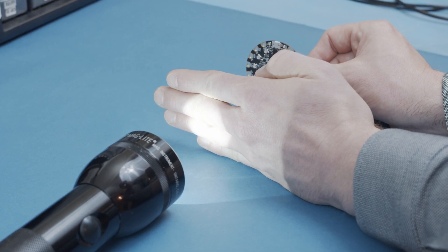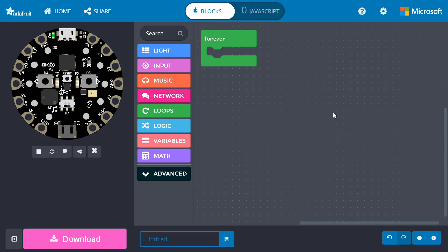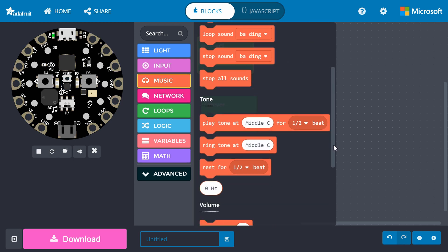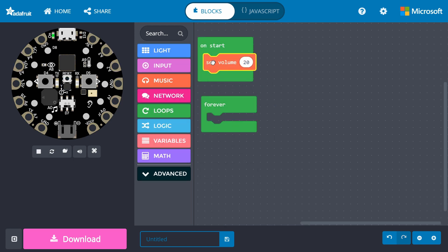In makecode, go into loops and drag an on start block to the work area. Then from music, drag a set volume to underneath on start. Since this is an alarm, we want this to be pretty loud. Crank it up to over 200.